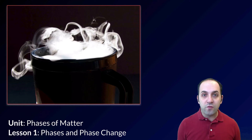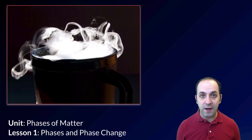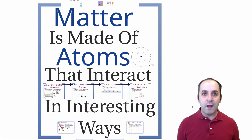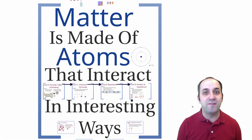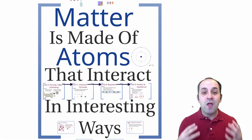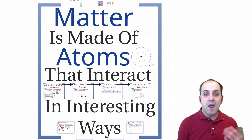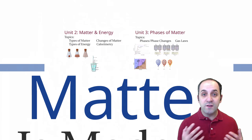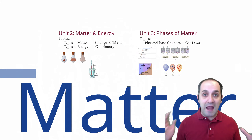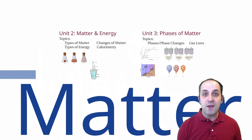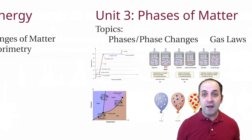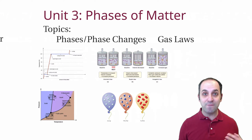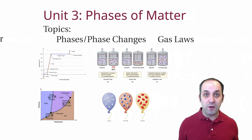Let's go back to the course organization Prezi just to see where we are. Our overall theme for the year is that matter is made of atoms that interact in interesting ways. Our first two units deal with large amounts of matter in the aggregate. In unit two, we dealt with matter and energy and looked at the interactions between them. Here in unit three, we're going to look at how we go between different phases of matter — things like solids, liquids, and gases.